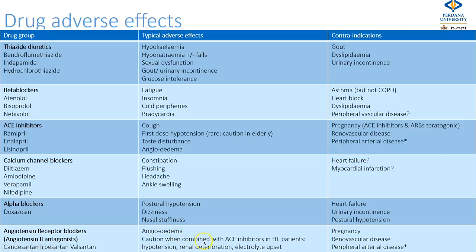For patients with very poorly controlled hypertension, combining ACE inhibitors with ARBs may produce an increased effect on blood pressure with severe hypotension, worsening renal function, and electrolyte upsets. This applies more to heart failure patients than to pure hypertension patients.